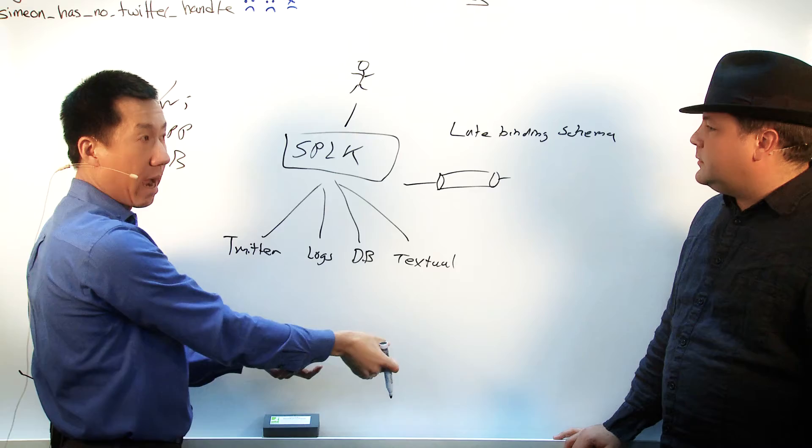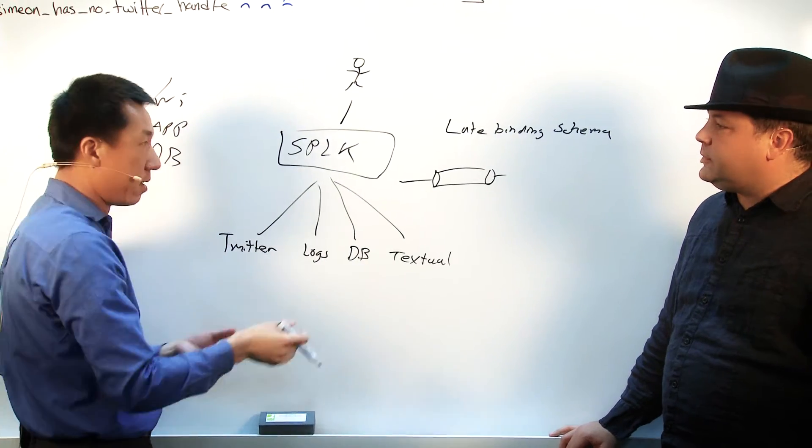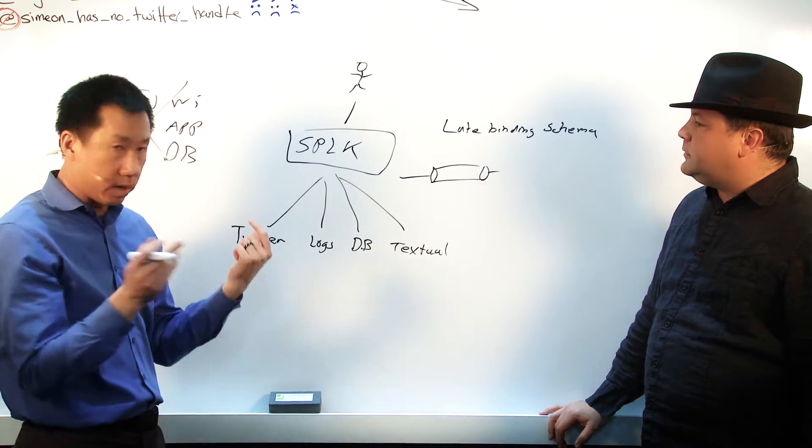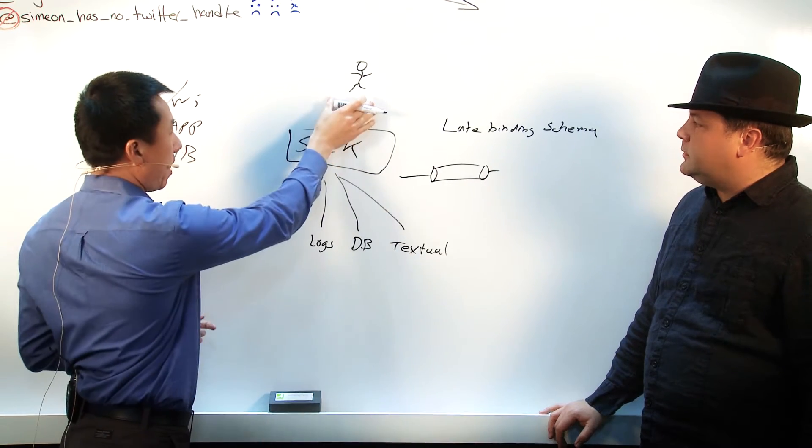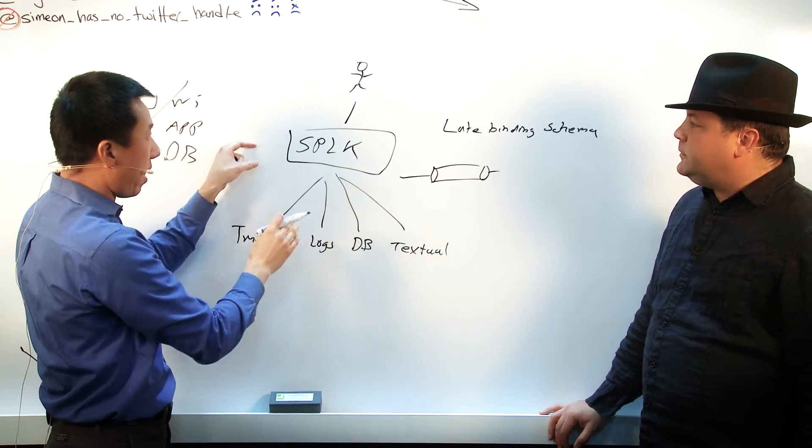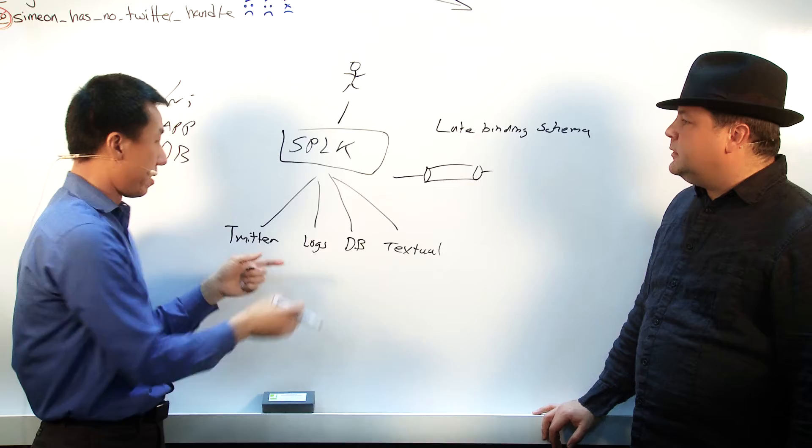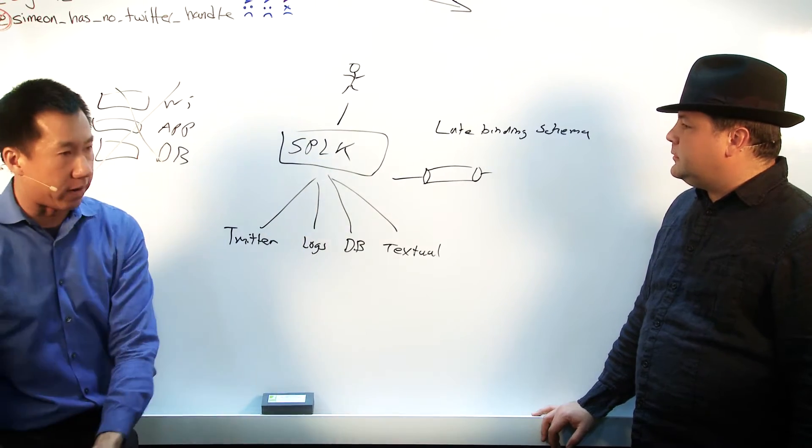So as it's written into our index, we identify or classify it as what we call the source type. So at search time, we apply various parameters against that source type to identify however you want. And so that allows us to differentiate database data from routing data from switching data or exhaust or logs.